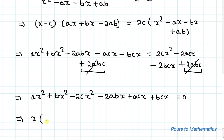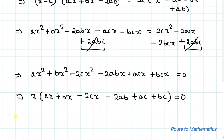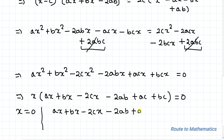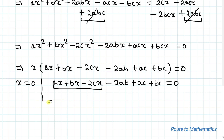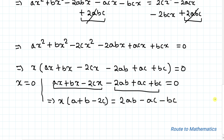Taking x common: x · [(a + b − 2c)x − 2ab + ac + bc] = 0. To satisfy the equation, x = 0 is one solution. The other solution comes from (a + b − 2c)x − 2ab + ac + bc = 0, giving (a + b − 2c)x = 2ab − ac − bc.